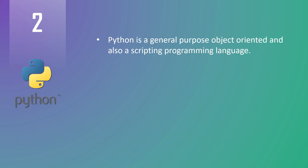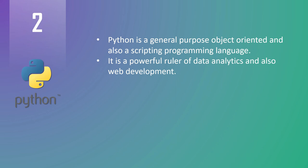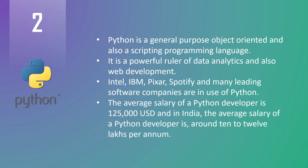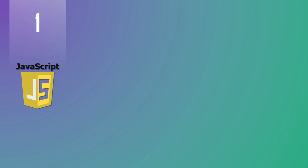At number two we have Python. Python is a general-purpose, object-oriented, and scripting programming language. It is a powerful tool for data analytics and also web development. Intel, IBM, Pixar, Spotify, and many leading software companies use Python. The average salary of a Python developer is $125,000 US dollars, and in India the average salary of a Python developer is around 10 to 12 lakhs per annum.